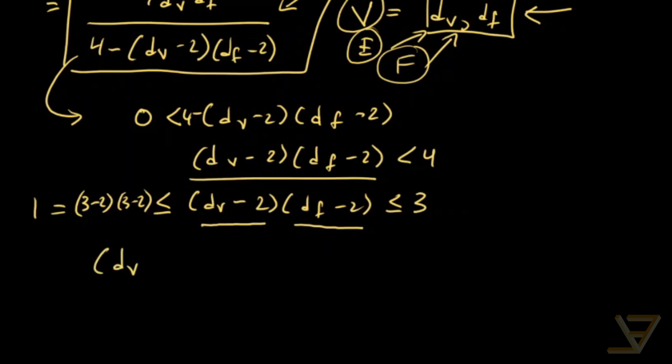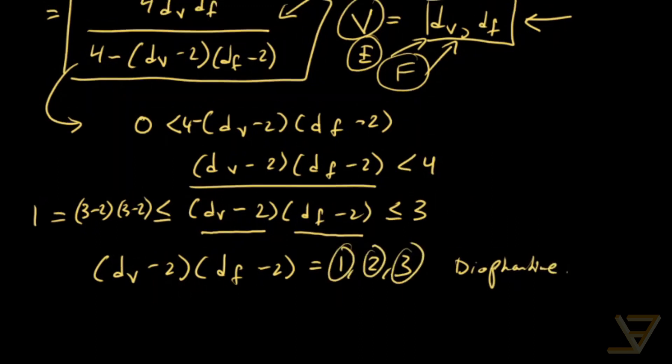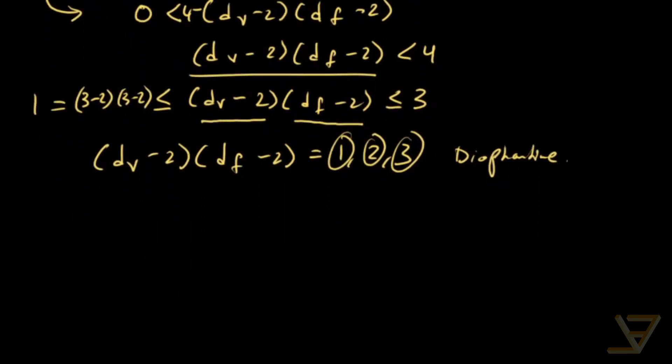So DV minus 2 times DF minus 2 can equal 1, 2, or 3. And now this is a simple Diophantine equation. And you can solve for each of these to find several solutions. And I'm not going to show the exact way of doing it because that's a number theory problem, not a geometry problem.